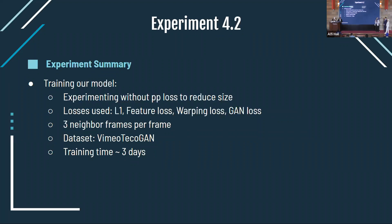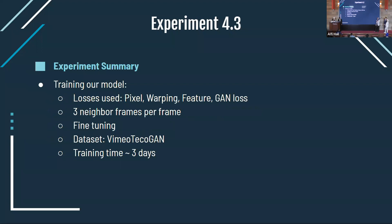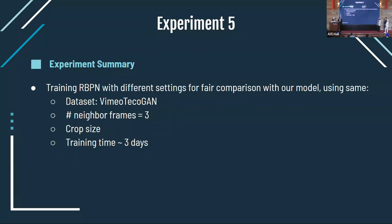In Experiment 2, we removed the ping-pong loss to monitor its effect. We used L1 loss, feature loss, warping loss, and GAN loss — all losses except ping-pong. We used three neighboring frames per frame. Training took around three days on the same dataset. In Experiment 3, we did some fine tuning: we trained part of the generator and then loaded it so training could continue from that point.